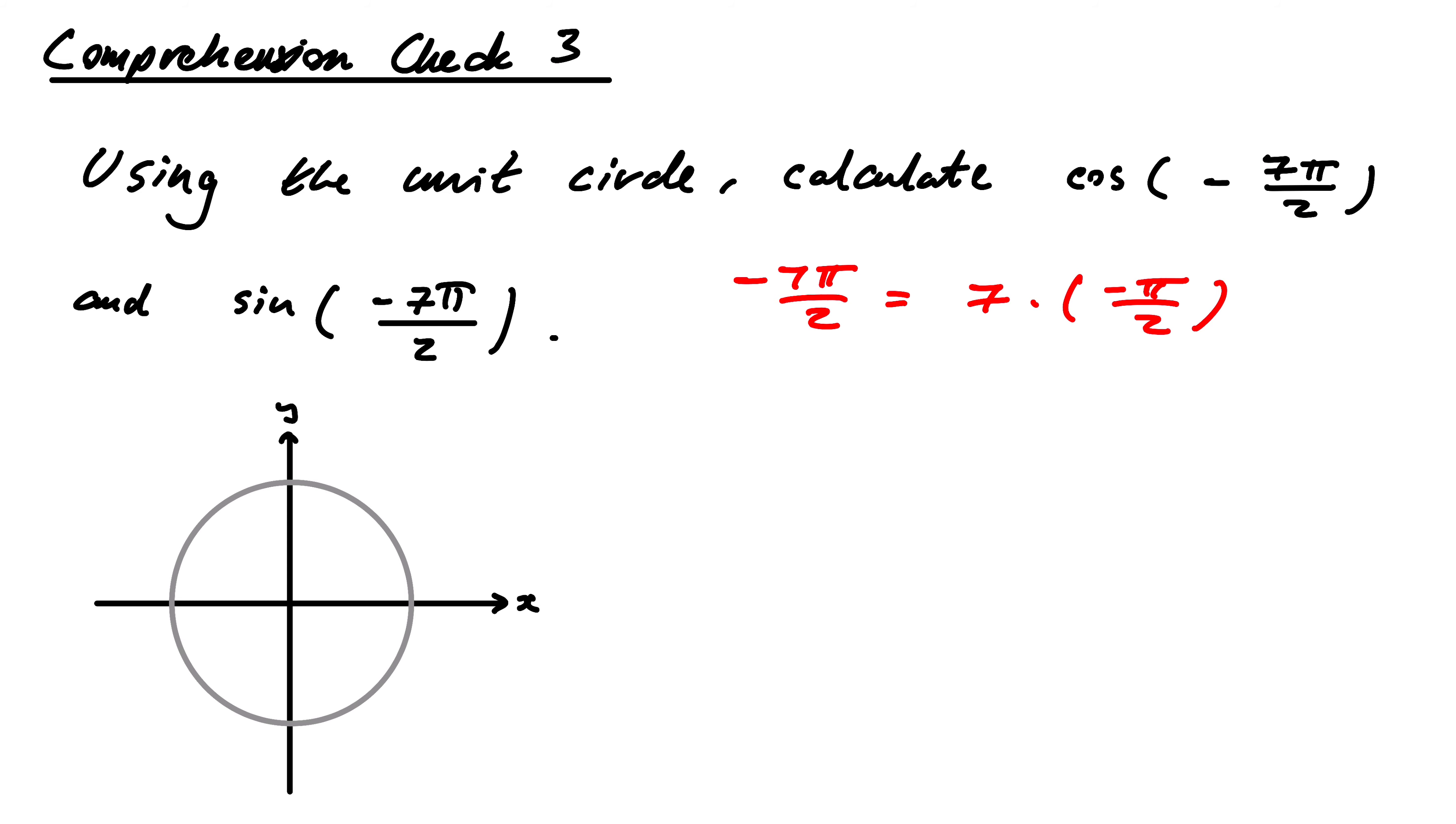So what we're going to do is rotate 7 times around the unit circle. We're going to rotate 7 times clockwise with a right angle.